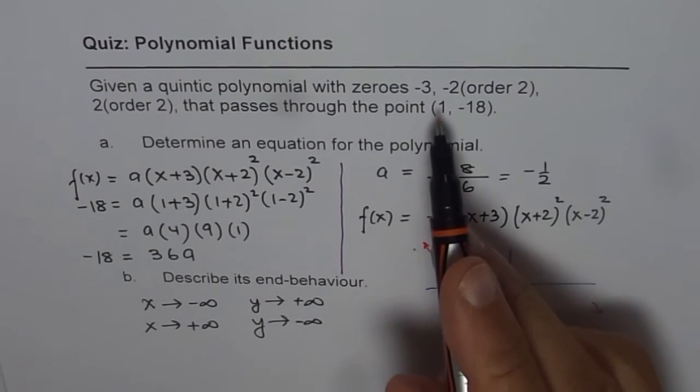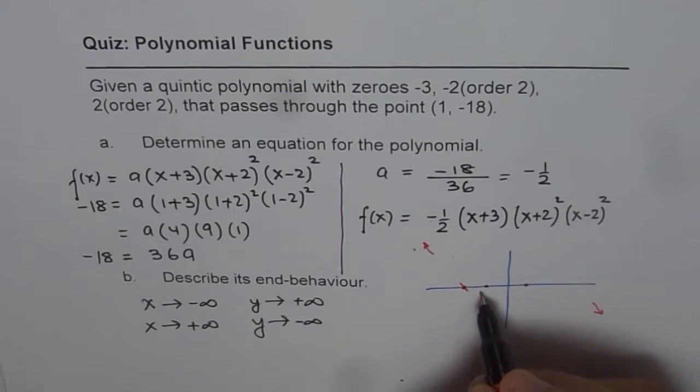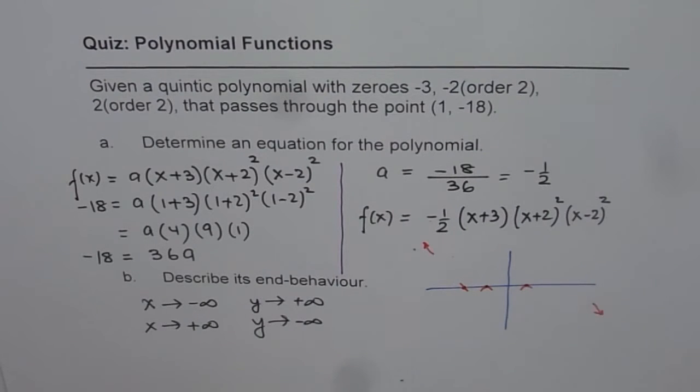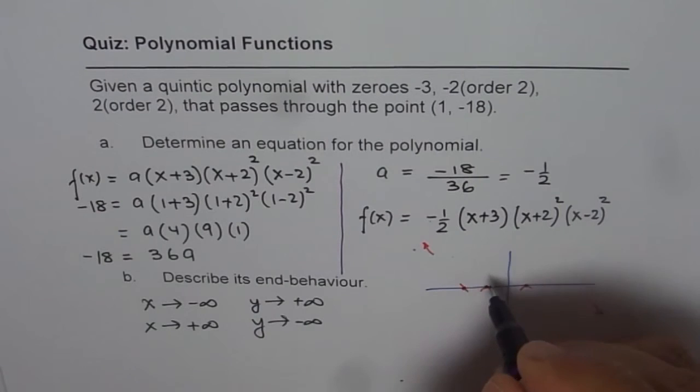But at minus 2, we have order 2, so it will bounce back. And here also it will bounce back. Therefore, if you draw the function, then let me draw it in a different ink, it will be kind of like this.